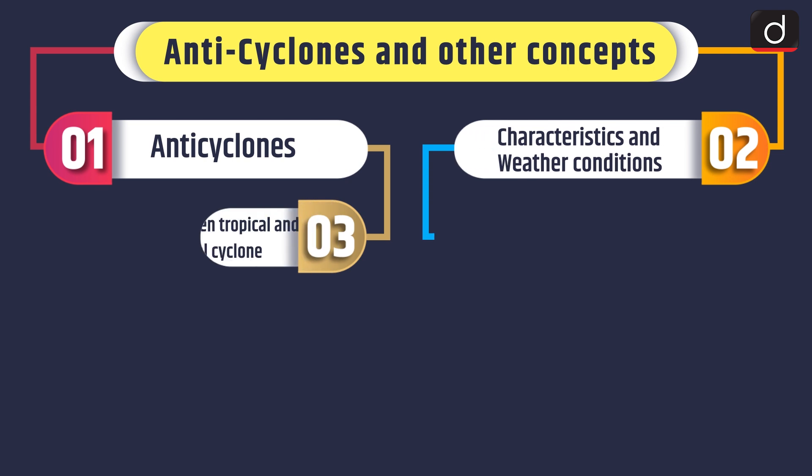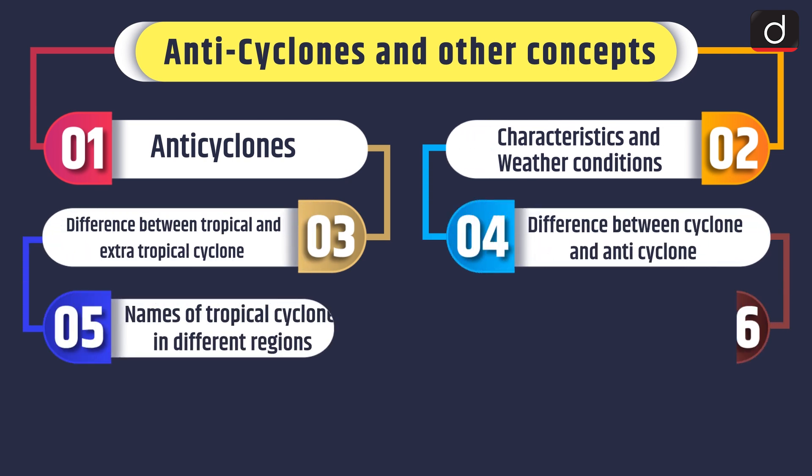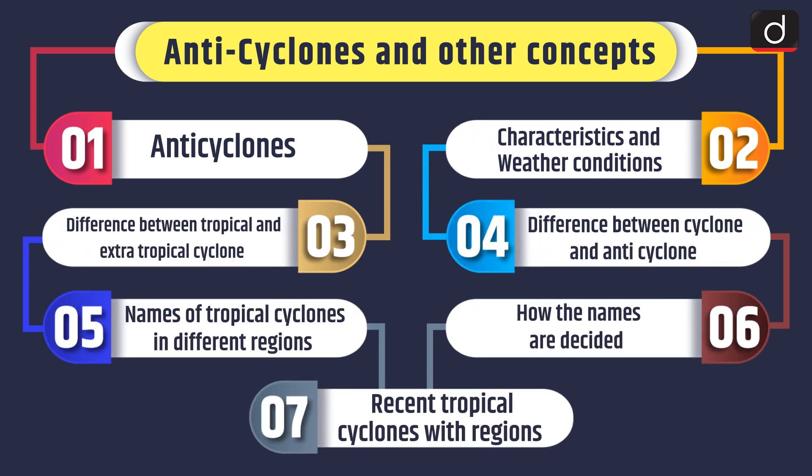Hello everyone, welcome to a new episode of MindMap. In today's episode, we will discuss about anticyclones and other concepts. In the previous episode, we read about extra tropical cyclones and tropical cyclones. In this episode, we will discuss anticyclones, their characteristics and weather conditions, the difference between tropical and extra tropical cyclones, the difference between cyclone and anticyclone, names of tropical cyclones in different regions and how the names are decided, and recent tropical cyclones with regions.